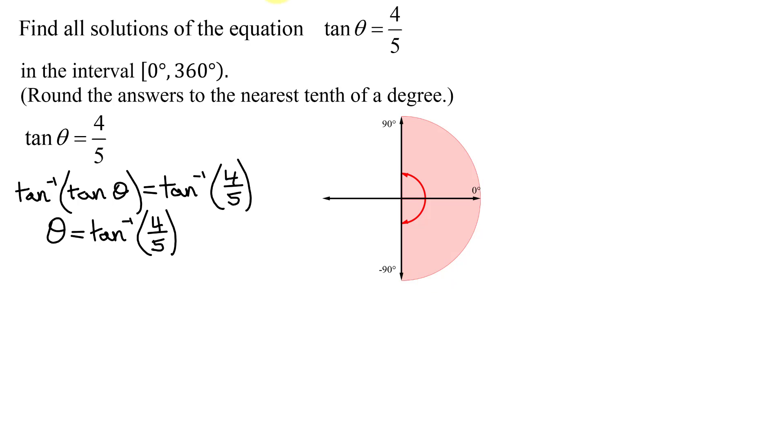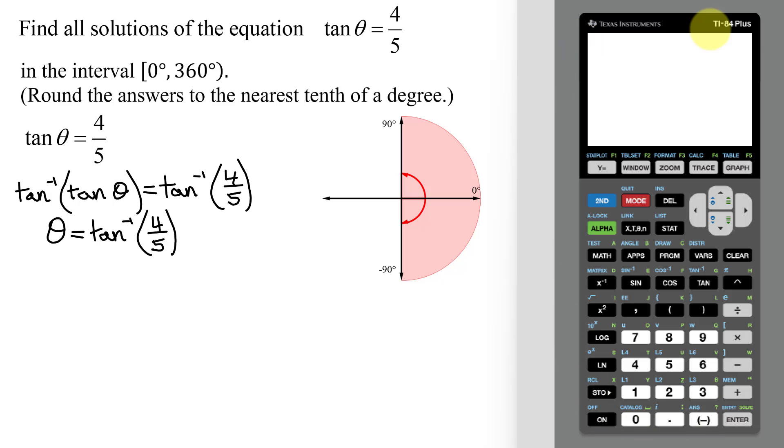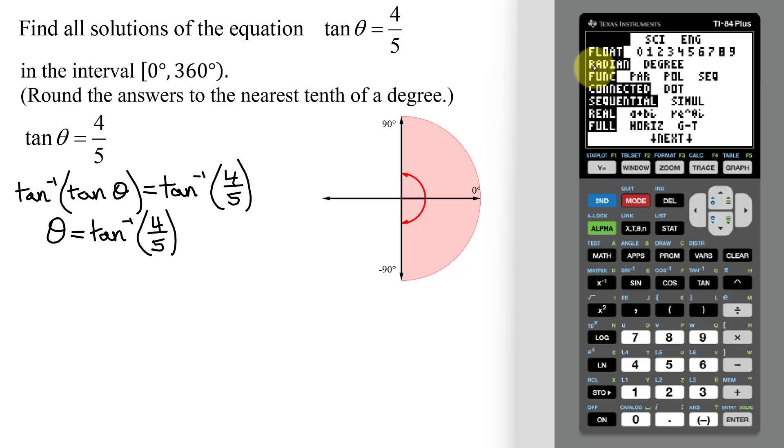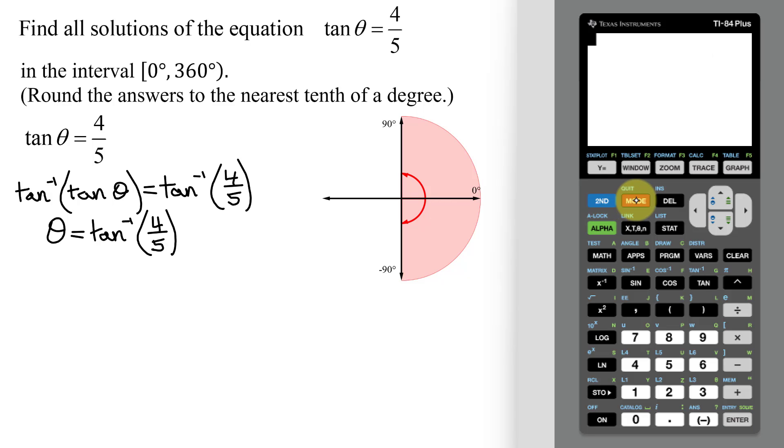So now I need to get my calculator. Here's my calculator. It's a TI-84+. The first thing I need to do is make sure it's in degrees. So I hit mode, notice right now it's in radians since that is highlighted. So I need to scroll down, scroll over to degrees, and then hit enter. Degrees is highlighted, so now I need to quit. So hit second mode. Now I need to find the inverse tangent function. It is up here in blue above the tangent key. So I have to hit second tangent. That gives me the inverse tangent function. It opens the parentheses. So now I just need to put in four divided by five, close parentheses, and hit enter.